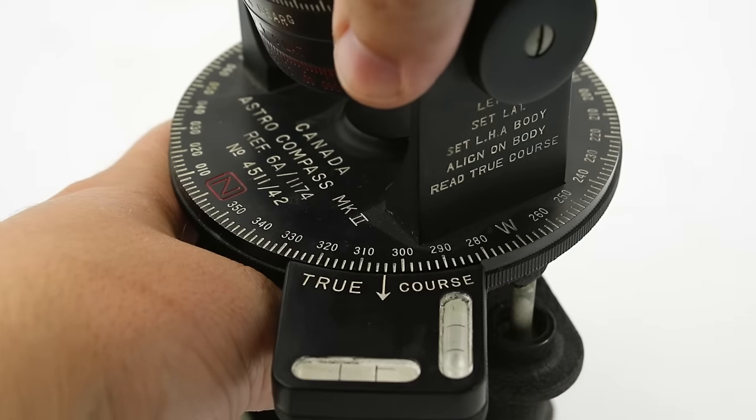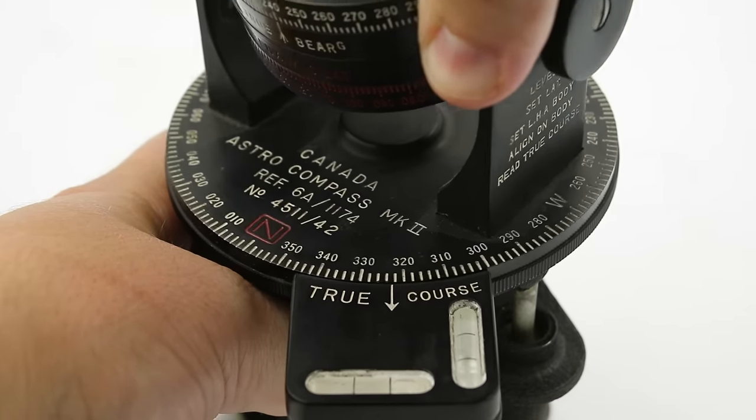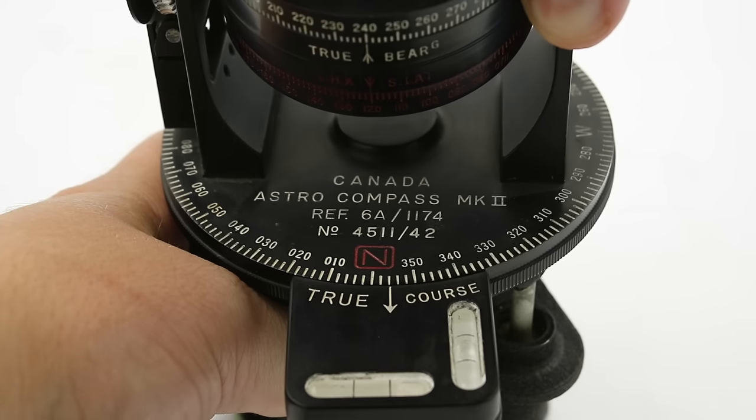Next we have our azimuth circle which reads out the direction of true north or one's true bearing or relative bearing to true north.